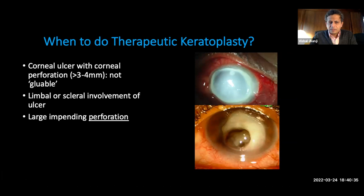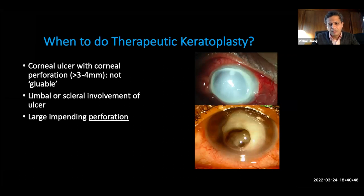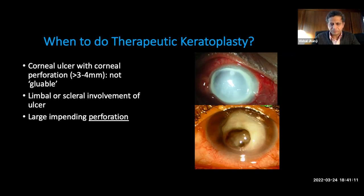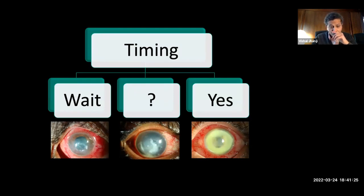So when do we do a therapeutic keratoplasty? If the ulcer is not glueable — which is usually more than three or four millimeters — you have to go ahead and perform a therapeutic keratoplasty. The second indication is limbal or scleral involvement, even if there is no perforation. Or if there is a large impending perforation, it is better to intervene early rather than waiting for actual perforation to occur. Timing in therapeutic keratoplasty is really, really important.